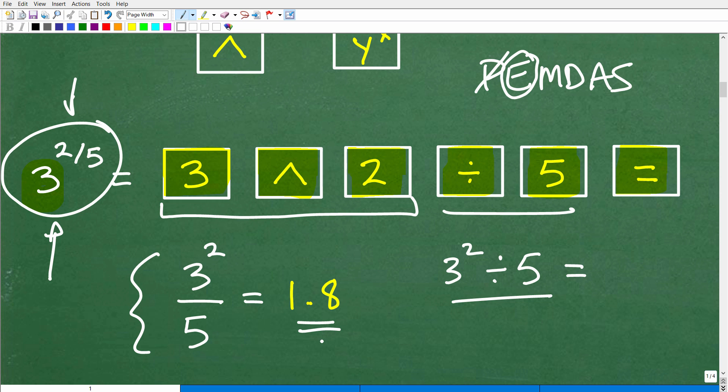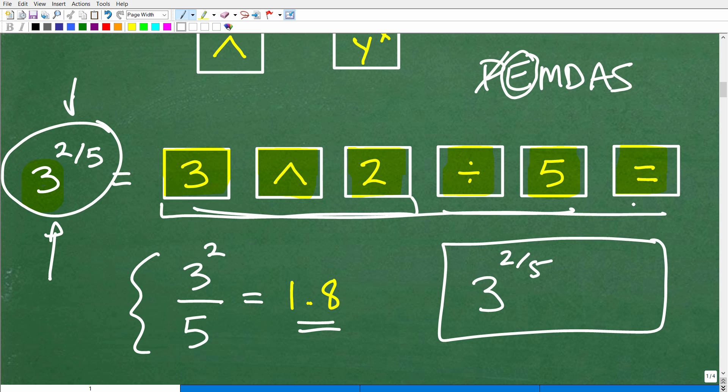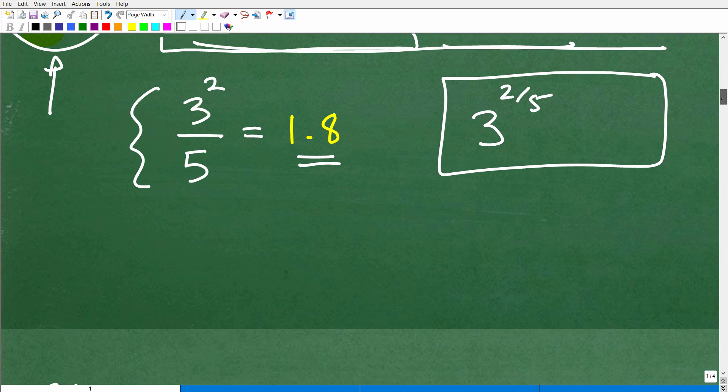Now, if you have one of those TI-83 or TI-84 calculators, graphing calculators, when you type in 3 to the 2 fifths power, you're literally going to see like a 3 to the 2 fifths in your screen. That's pretty awesome. But if you're using one of these more basic calculators, you're not. So again, this really all depends on what type of calculator you're using.